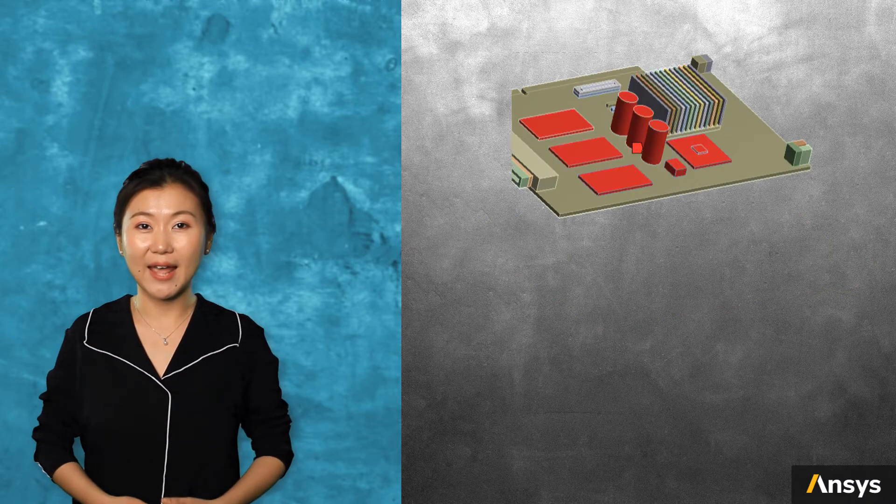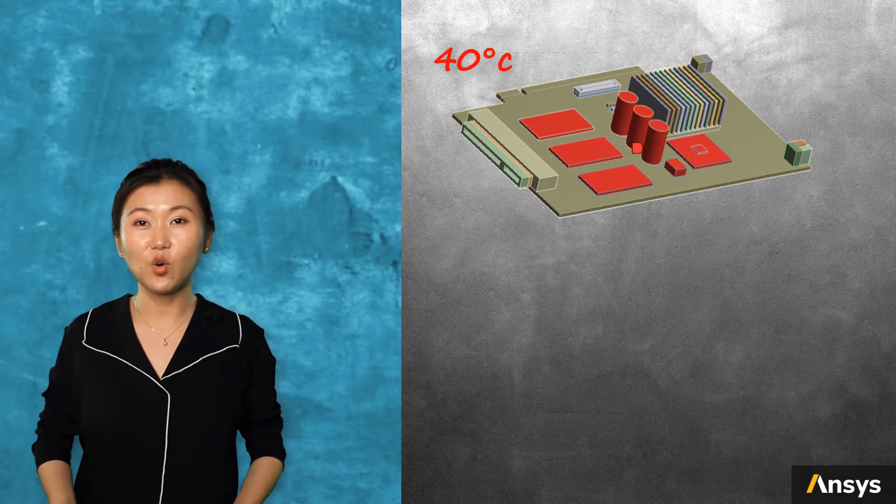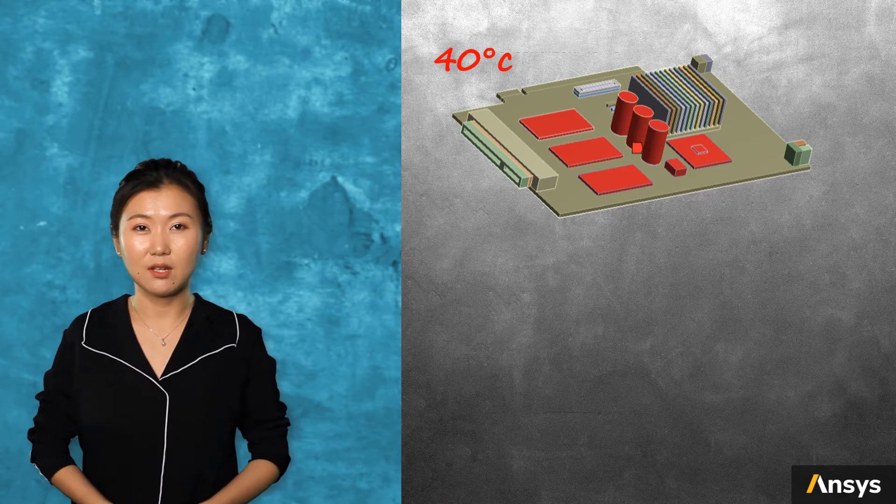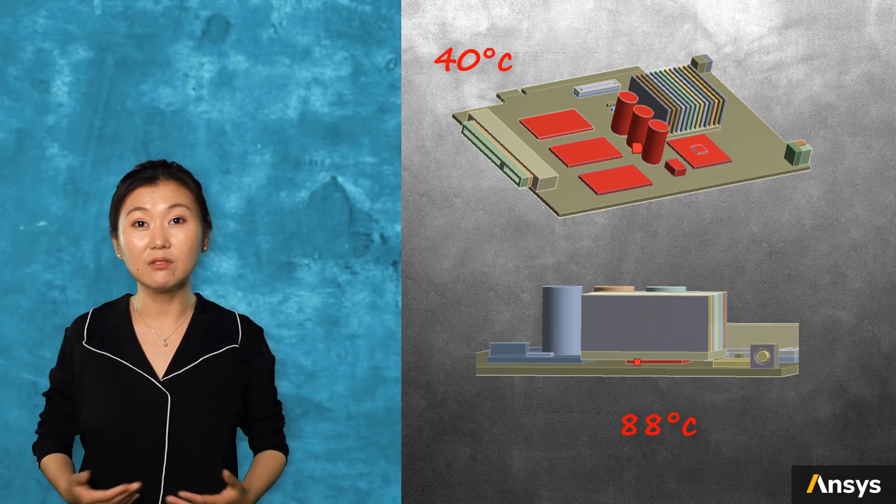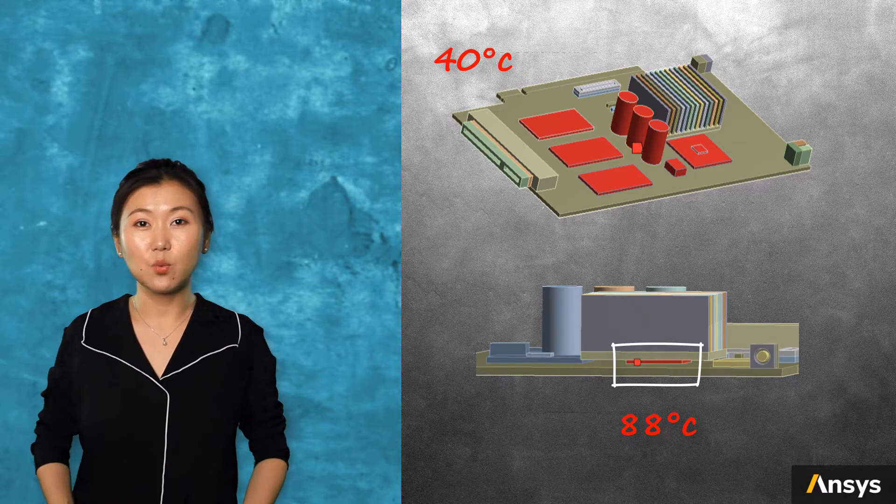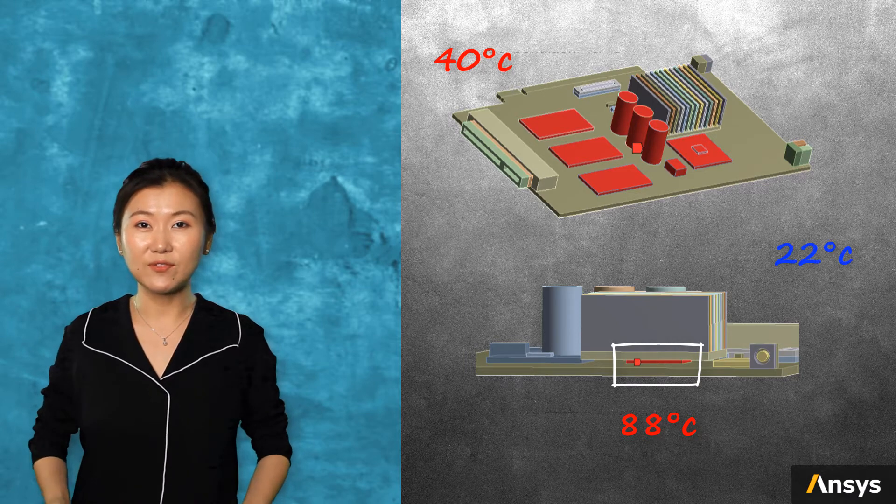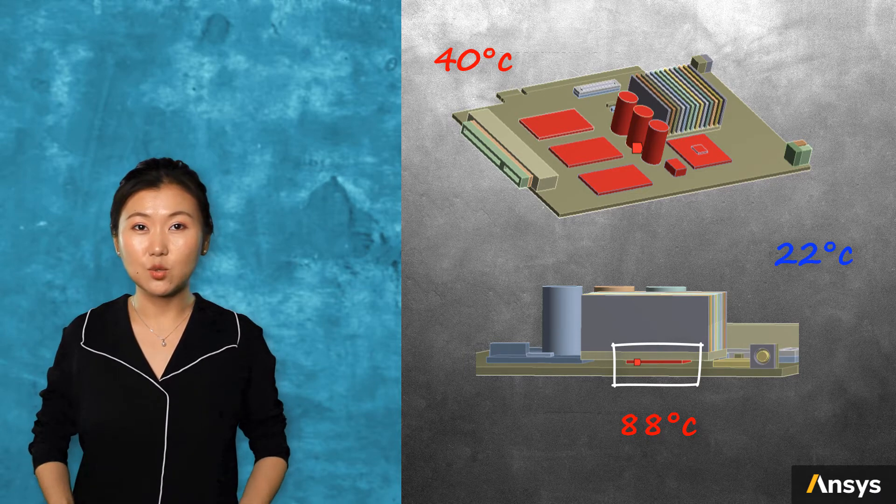Two thermal conditions are added to the board. One is 40 Celsius degrees for the majority of the electric components. The other one is for the piece under the heat sink. This one is with higher temperature, 88 Celsius degrees. The reference temperature of the problem is 22 degrees.